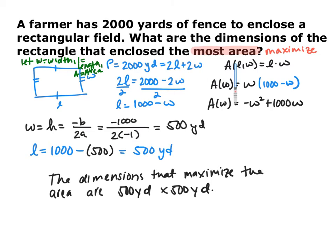Since it's not asking for the maximum area, just the length and width that maximize the area, we want to find the x-coordinate — or w in this case — which is the x-coordinate of our vertex. Since this is in standard form, I'm going to do negative b over 2a, where b is 1,000 and a is negative 1. You end up with our width w equal to 500 yards.